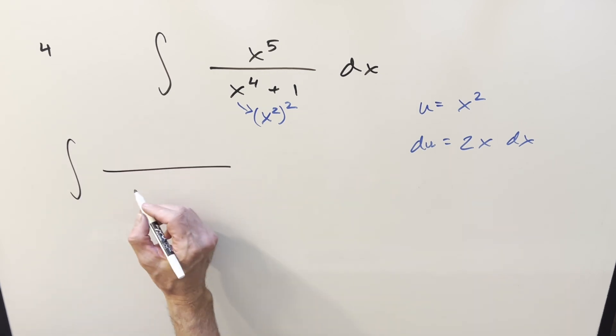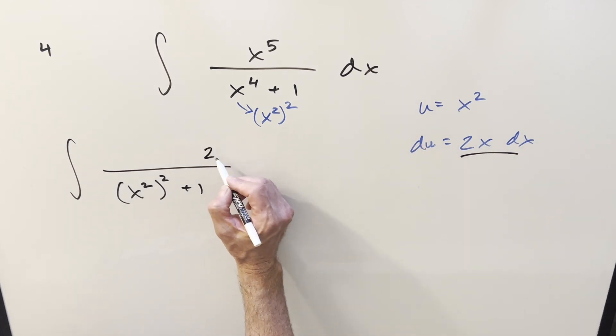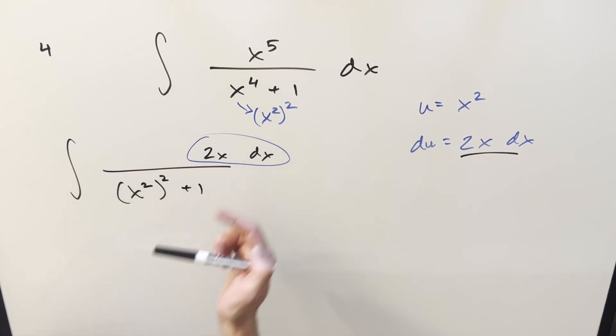So before we actually substitute, let's write it like this. We have x squared all squared plus 1. So that part's nice. Then I want to create this exactly like this to set it up. So we'll do 2x dx. So that part, we got the du we want. To make it work, we need to get it to be x to the 5th.